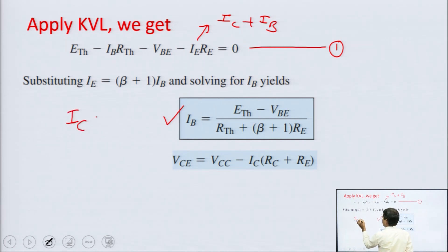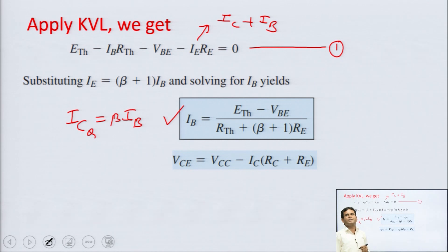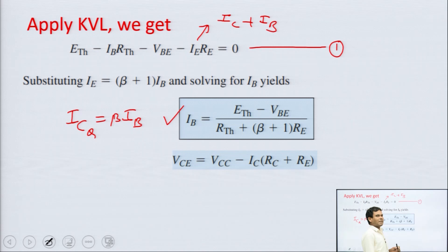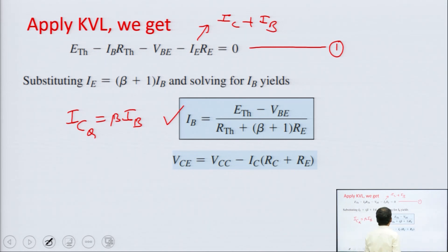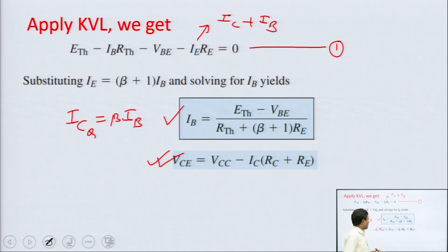IC equals β·IB. If you say ICQ, then Q stands for quiescent point or operating point. Similarly, to find VCE we write the output KVL equation, and the approximate value of VCE is obtained. We have set IC approximately equal to IE. You can also write it as: VCC minus IC·RC minus IE·RE. This way we get the value of VCE as well.